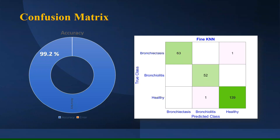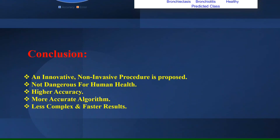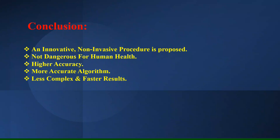The confusion matrix for Fine KNN shows 63 bronchiolitis signals accurately predicted with only one predicted incorrectly, and 139 healthy signals accurately predicted with only one predicted incorrectly, while all 52 bronchiectasis input signals are accurately predicted, giving us 99.2% accuracy. Conclusion: an innovative and non-invasive procedure is proposed for the detection of bronchiolitis and bronchiectasis. Since no harmful radiation is used, this method is not dangerous to human health. The accuracy obtained was 99.2%, which is more accurate than other proposed algorithms, and the method is less complex and gives faster results due to its simplicity.